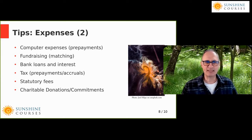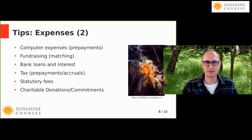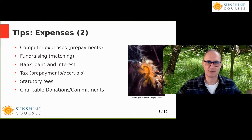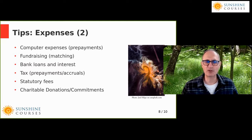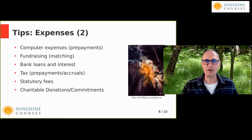Bank loans and interest are a bit complicated. If you take out a loan for £10,000 and repay the bank £200 a month, some of that £200 relates to interest and some to loan principal repayment. The only way to know how much is which is to ask the bank or check the loan documentation. For example, if on 1st February you take out a loan of £10,000 and at end of February repay £200, you need to split that payment between interest expense and loan repayment.